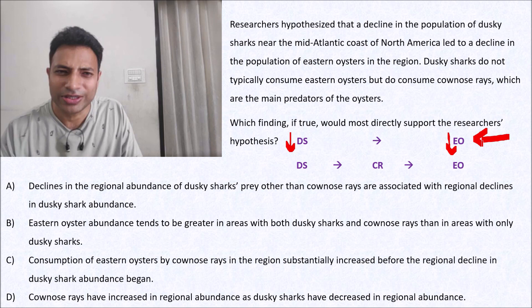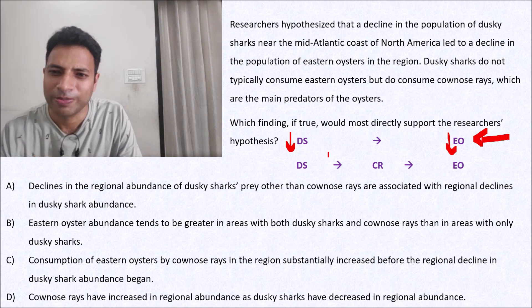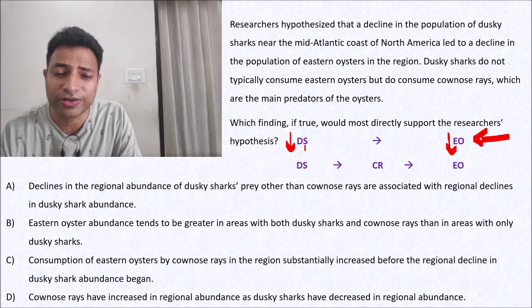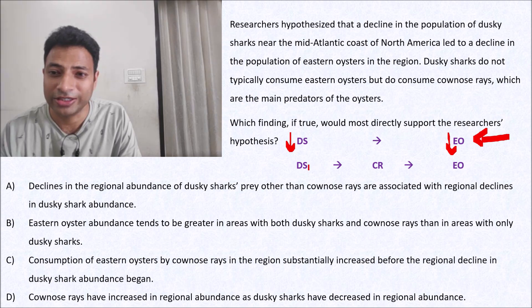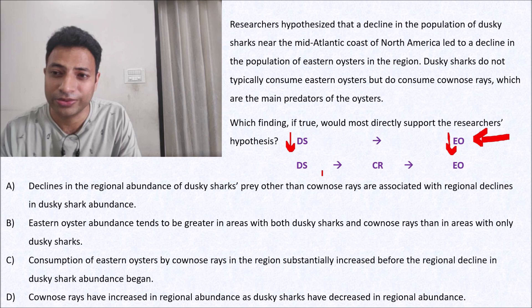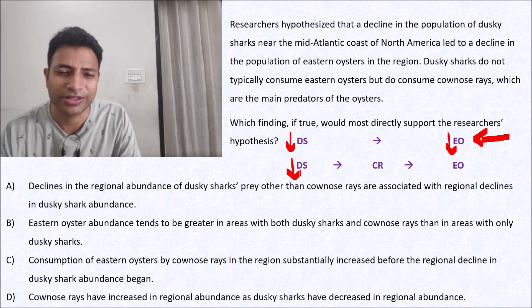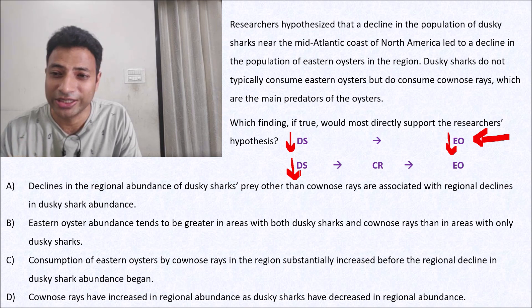We have to strengthen this. We have to prove that it is because of dusky sharks that eastern oysters' numbers are going down. But at the same time, dusky sharks don't eat eastern oysters directly. So what can we say? Let's say the dusky shark population is declining — it's going down. So what will happen?